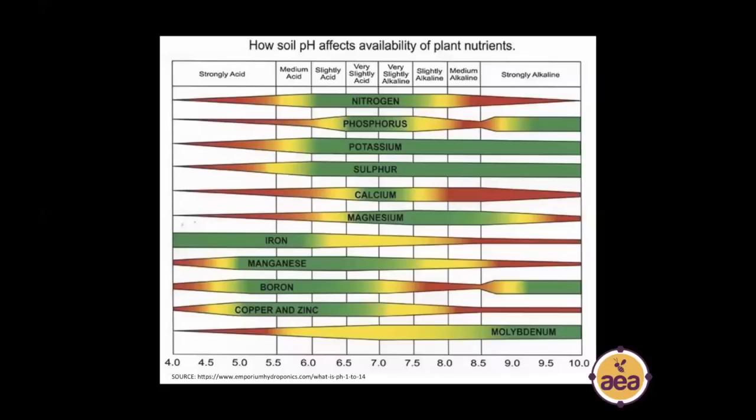We're familiar with this diagram and chart. The problem is that it looks at nutrient pH only from a single dimension — pH is one-dimensional: left versus right, high versus low pH.